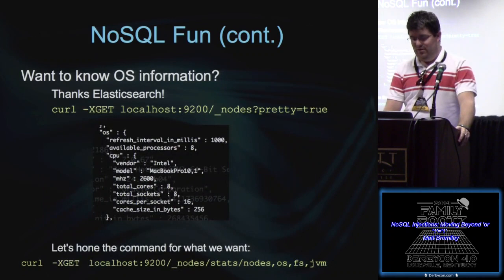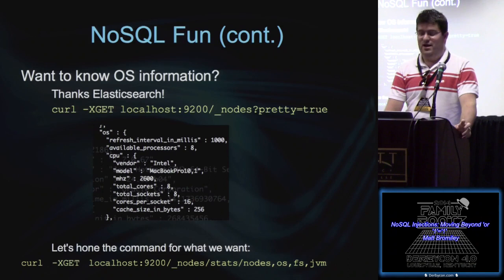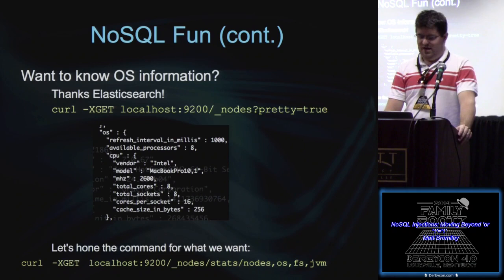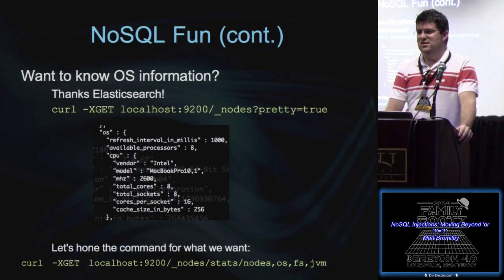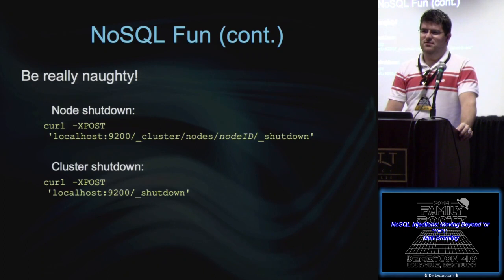Last but not least, we can dump OS information. This is an Intel MacBook Pro at 2600 MHz — all that just from running one query. So I've just profiled your Elasticsearch server, gotten all your node information, everything with just one query. Because Elasticsearch was created by guys who like convenience, you can filter down and specify exactly what you want to see: just give me nodes, OS, file system, and JVM. Very easy to profile a server in an instance. Then you can be really naughty — you can shut down a node or the entire cluster from the HTTP. One curl command and you can bring the whole thing down.